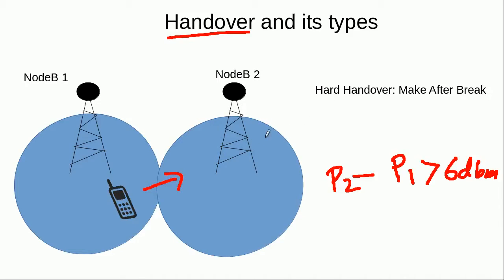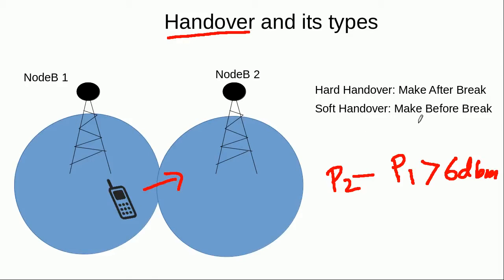In the other case, when this mobile first connects with Node B number 2, and then after being connected with Node B number 2 it breaks its connection with Node B number 1, then it is called a soft handover, because it is a make-before-break type of scenario. In that case, there is a time when this mobile is connected with both of these two Node Bs simultaneously. This is known as the soft handover, or make-before-break.